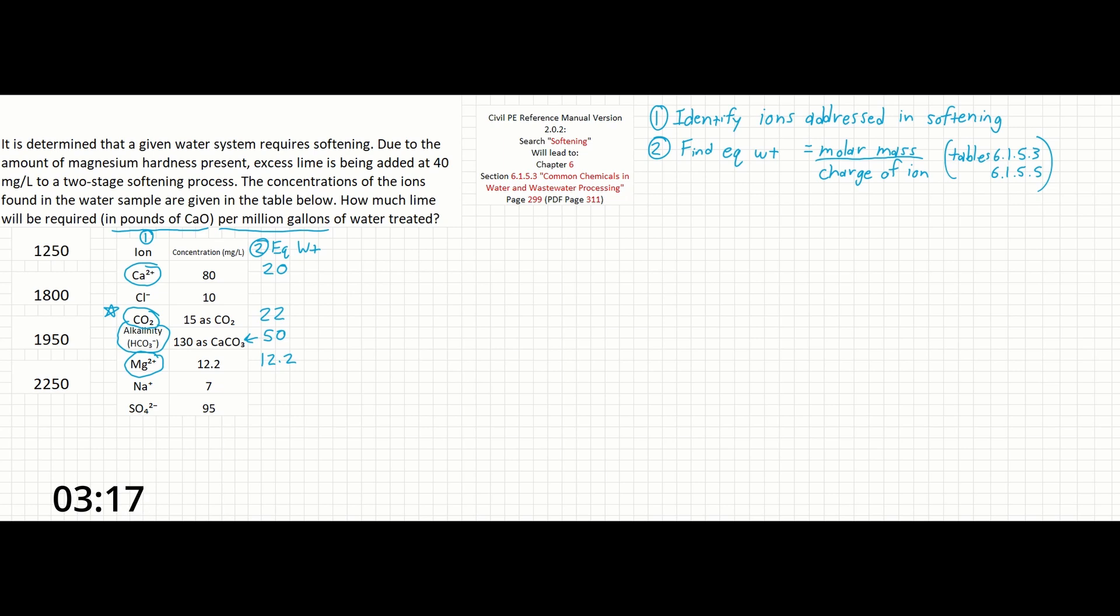And one more thing, we also need the equivalent weight of calcium oxide, CaO. This one is also in the manual, and it's 28. So now that we have our equivalent weights, let's divide the concentrations by these numbers to get our milliequivalents per liter. Milliequivalents per liter is the same as the mg per liter over the equivalent weight. This can be thought of as the relative reactability of the ions in the solution.